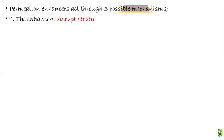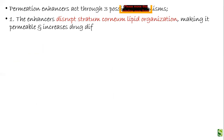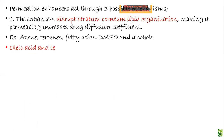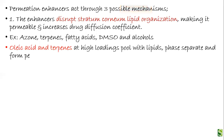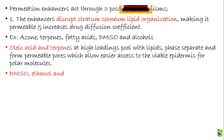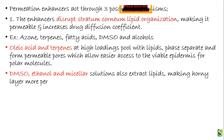Permeation enhancers act by three possible mechanisms. The first is enhancers that disrupt the stratum corneum lipid organization, making it permeable and increasing the drug diffusion coefficient. The chemicals which act by this method are azones, terpenes, fatty acids, DMSO, and alcohols. Oleic acid and terpenes at high loadings pool with the lipids, causing phase separation and forming permeable pores which allow easier access to the viable epidermis for polar molecules. DMSO, ethanol, and micellar solutions also extract the lipids, making the horny layer more permeable by forming aqueous channels.